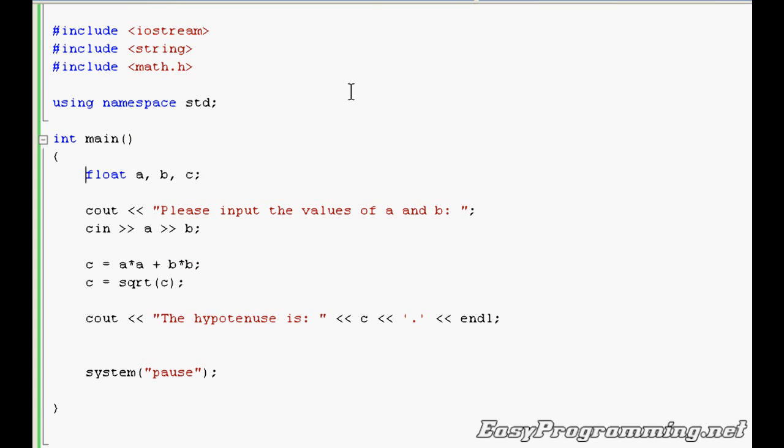A value returning function is a function that returns one value back to the main program. In this case, we'll be returning the value of c.